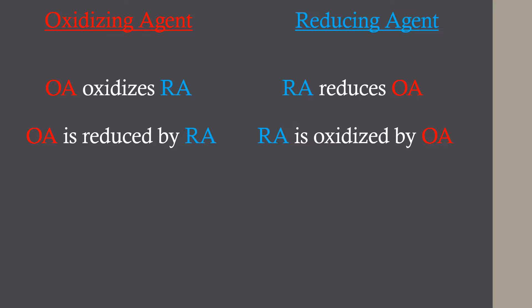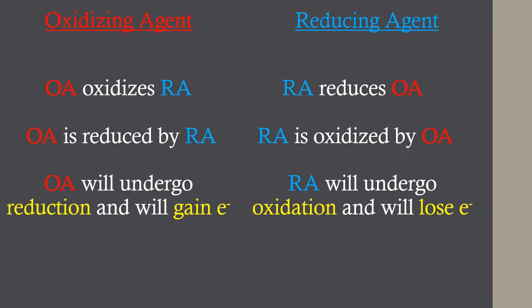For an oxidizing agent, they will always oxidize or be reduced by a reducing agent. On the other hand, the reducing agent will simply do the opposite. The main idea to take away from this is that the oxidizing agents will always be the ones to gain electrons, while the reducing agents will always lose electrons.